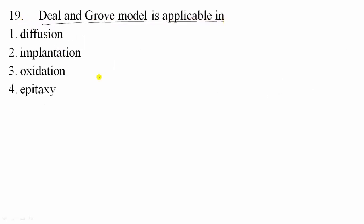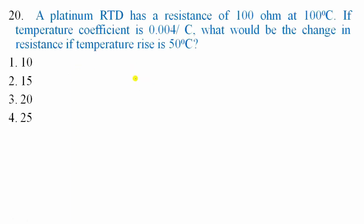Question 19: The Deal and Grove model is applicable in thermal oxidation of silicon. Option 3 is correct.